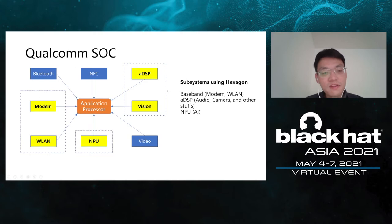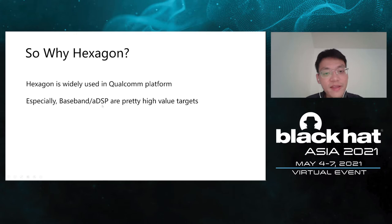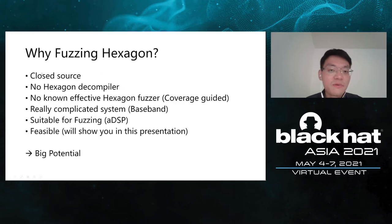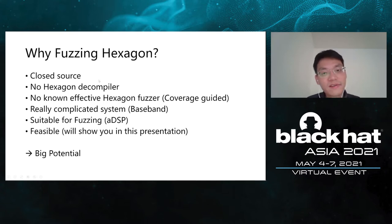That's why we are interested in Qualcomm's Hexagon and we are going to fuzz it. Why is Hexagon widely used in the Qualcomm platform? Baseband and ADSP are pretty high-value targets for attacks and for researchers. Why are we fuzzing Hexagon? There are several reasons. The first one is that it's closed source — all the Hexagon targets are closed source, and you don't have any source code.